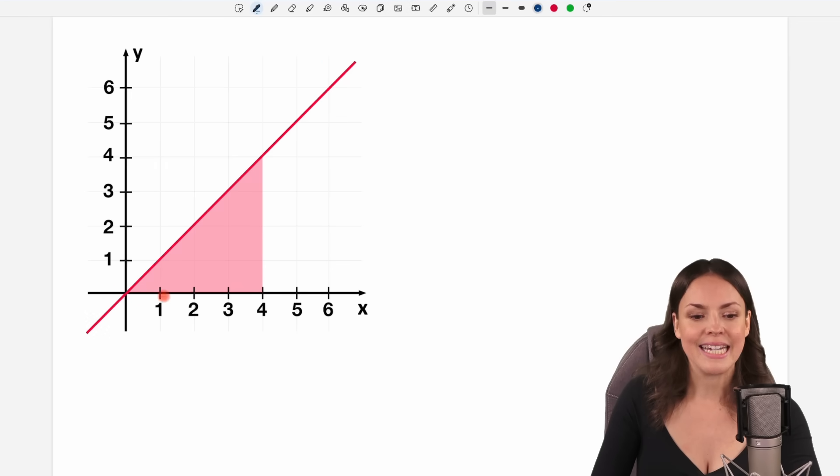We want to find this area between this function and the x-axis, starting at 0 and going up to 4. We want to use an integral this time. We know already on the x-axis we want to go from 0 to 4, so these are our limits from 0 to 4.